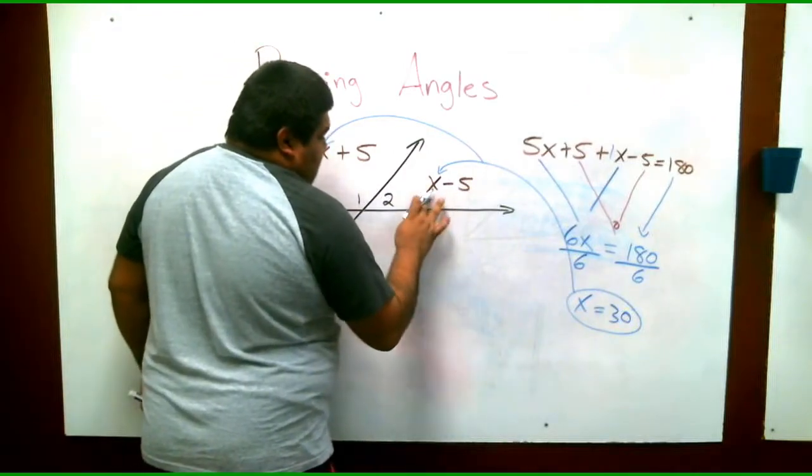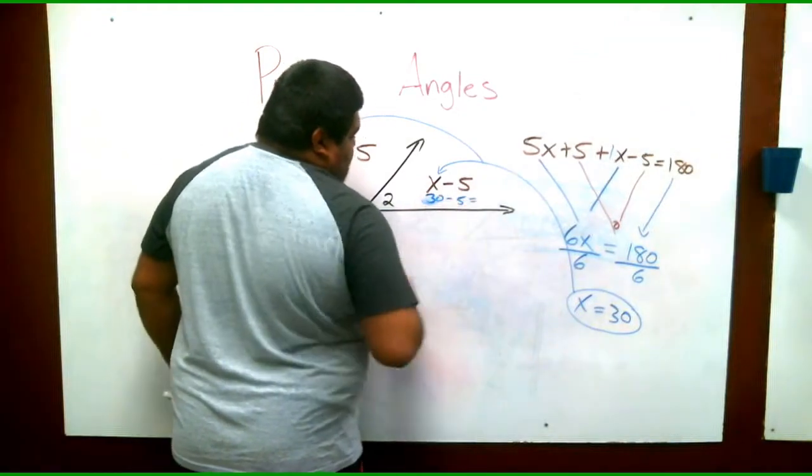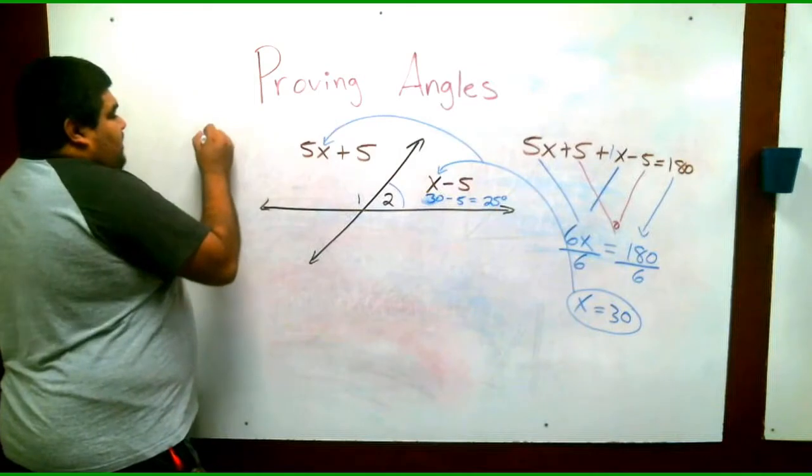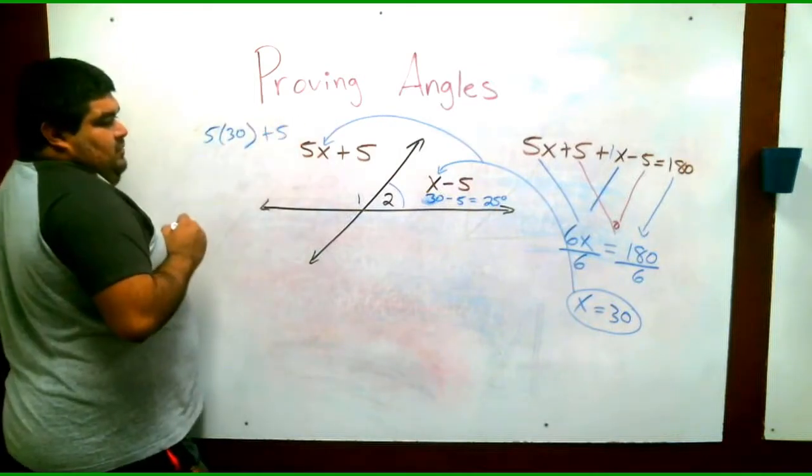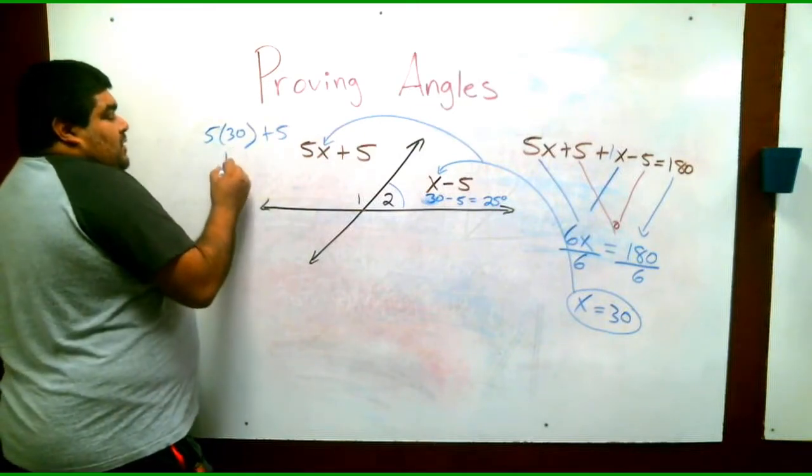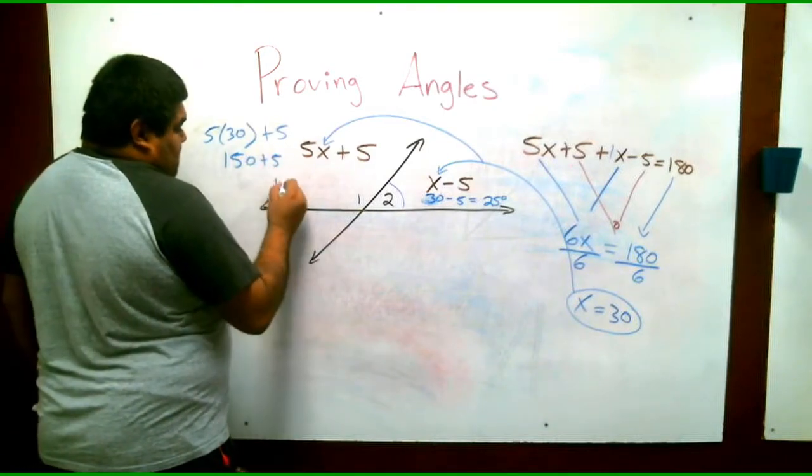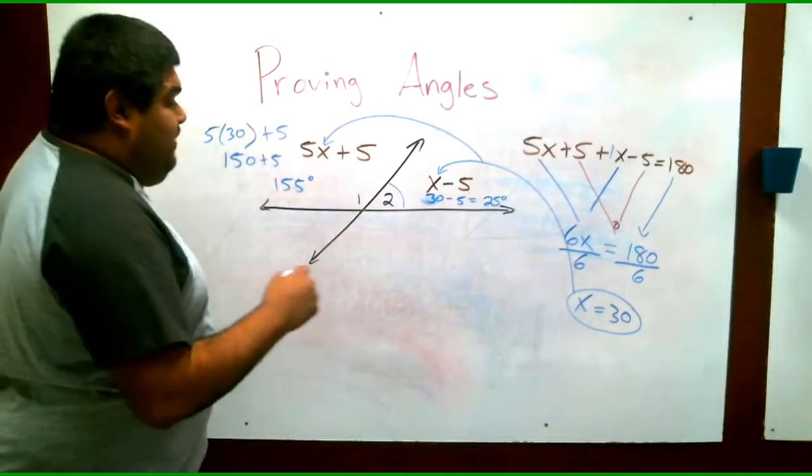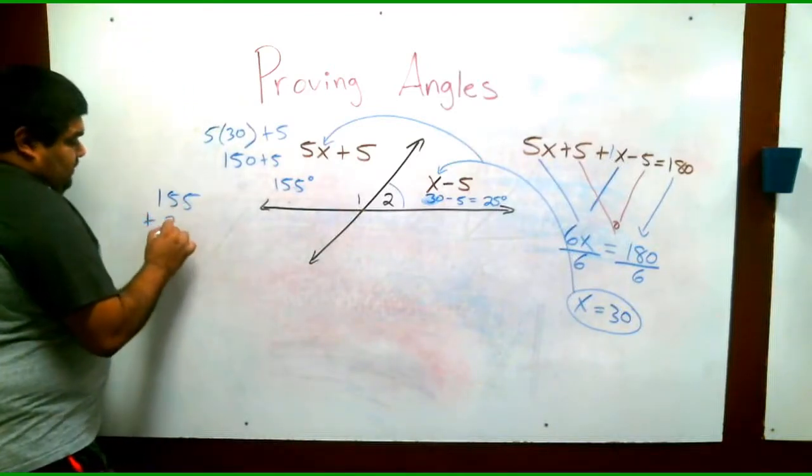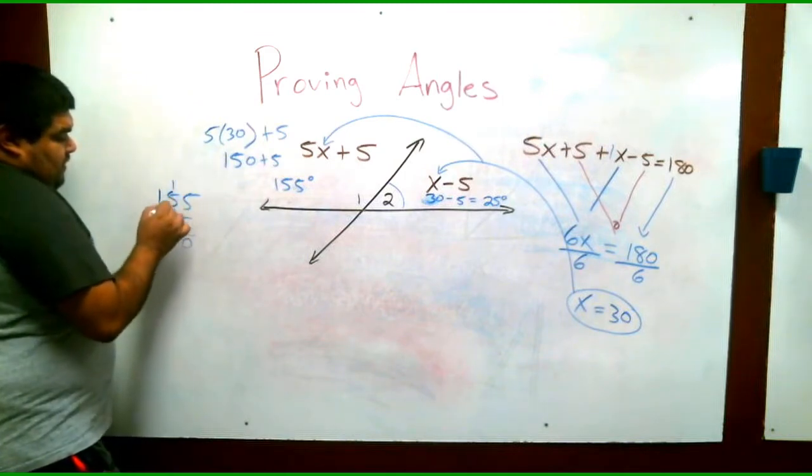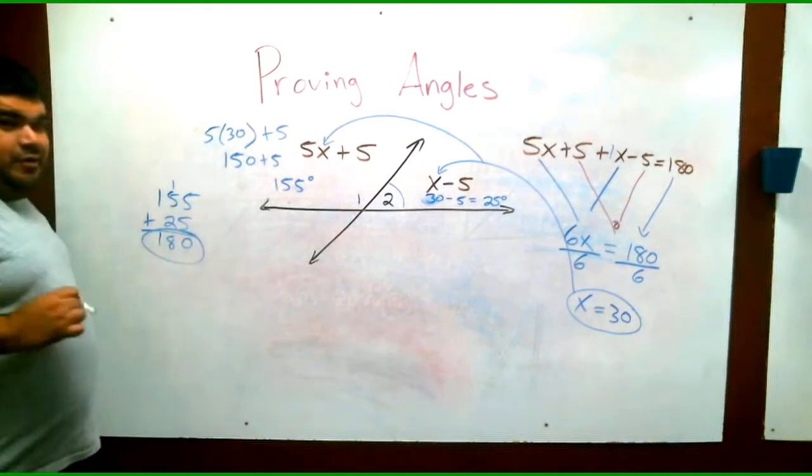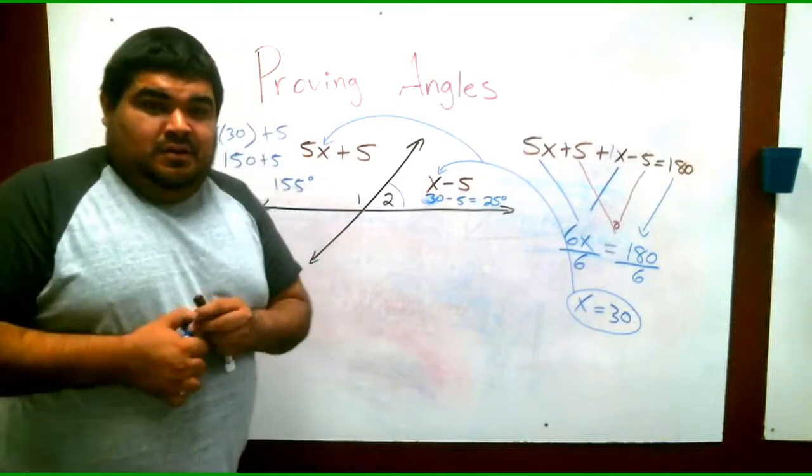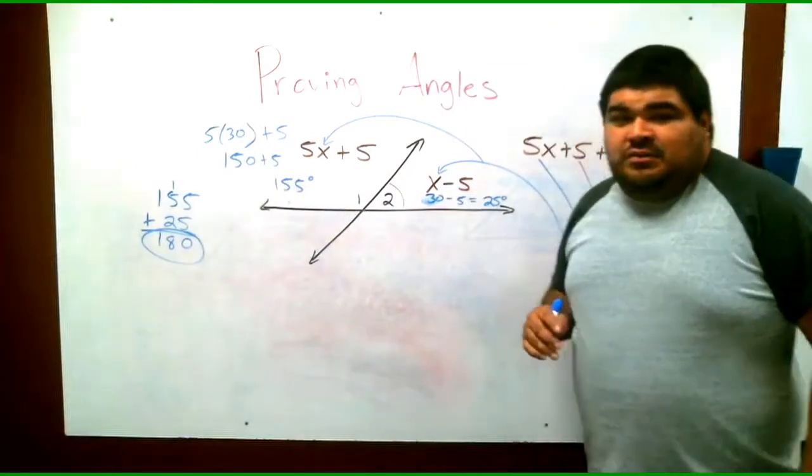So we have x, or in this case instead of x we have 30 minus 5 equals 25. So we know angle 2 is 25 degrees. Here we have 5 times 30 plus 5. 30 times 5 is 150 plus 5 is 155 degrees. We can check it if we add 155 plus 25 to make sure it equals 180. So 155 plus 25 equals 180. Look at that. It equals 180. So we know that angle 1 is 155 degrees. Angle 2 is 25 degrees, and that's how you solve for angles when you have two equations.